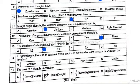Question 14: in a right triangle, the sum of the squares of the lengths of the two smaller sides is equal to the square of the length of the hypotenuse. Option C is correct. Question 15: the area of a triangle is equal to one-half base multiplied by height. Option A is correct.